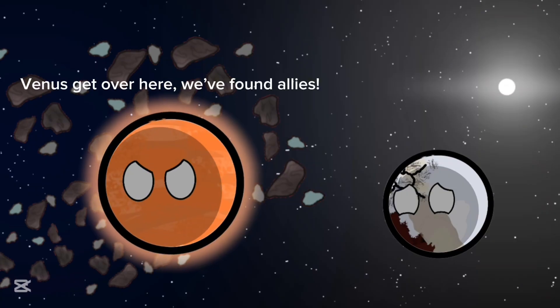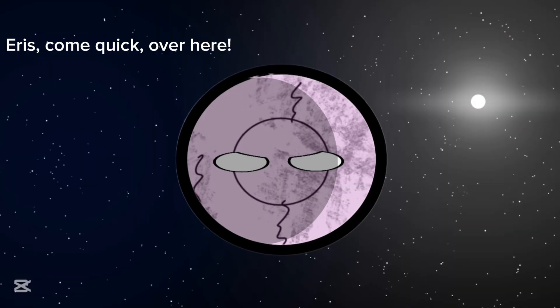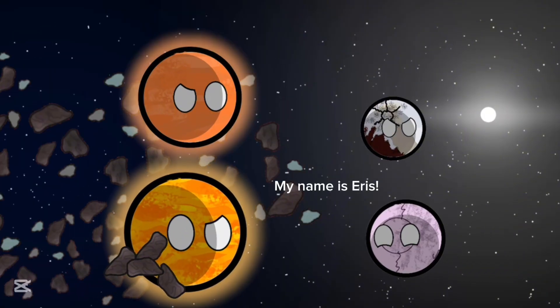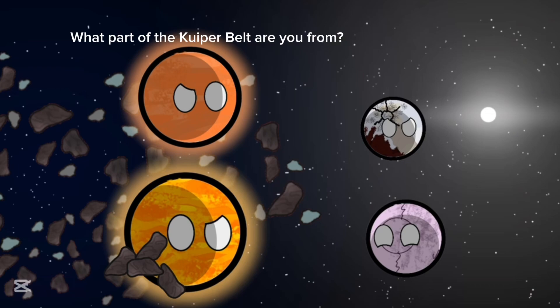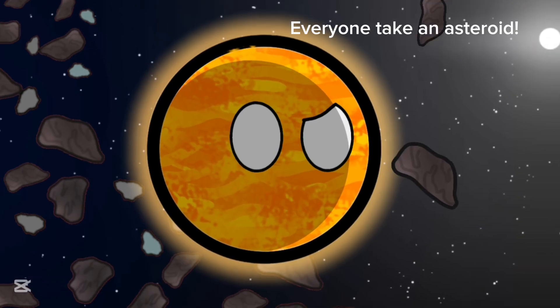Oh, Venus, get over here. We found allies. Alright, coming. Eris, come quick, over here. Oh, hey guys. My name is Eris. What part of the Kuiper Belt are you from? Guys, enough dawdling. Let's get down to business. Everyone take an asteroid.